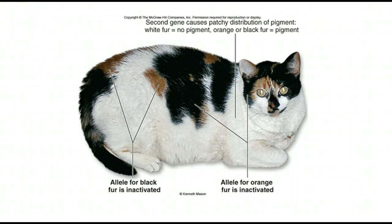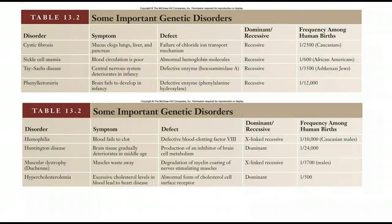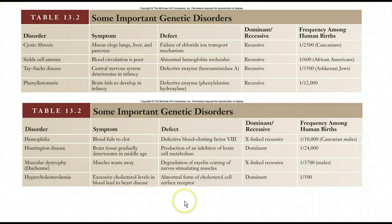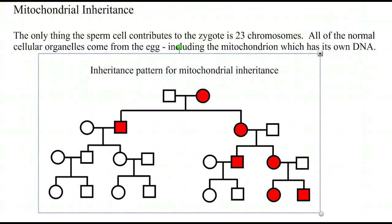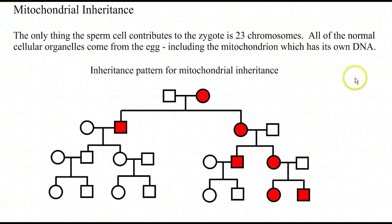Here's a chart from your text which has some other diseases. Some we've talked about: cystic fibrosis, sickle cell anemia, Tay-Sachs disease, and phenylketonuria — these are all recessive, and the chart gives their frequency. Then you've got some X-linked ones — we talked about hemophilia, and Duchenne muscular dystrophy is X-linked. There's also a dominant disease gene, and hypercholesterolemia — which is excess cholesterol — that's also dominant.